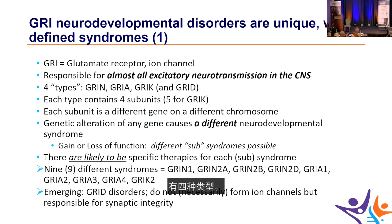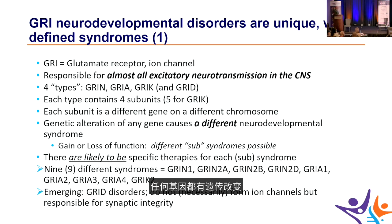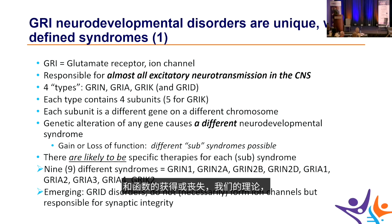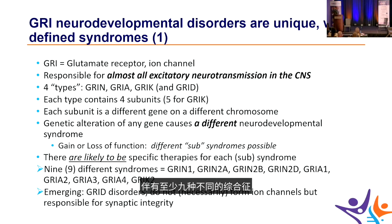There are four types: GRINs, GRIAs, GRIKs, and GRIDs, each containing four or five subunits, each subunit being a different gene on a different chromosome. Genetic alterations in any gene cause a different neurodevelopmental syndrome, and gain or loss of function may cause different sub-syndromes, potentially requiring specific therapies — yielding at least nine different syndromes across the disorders.